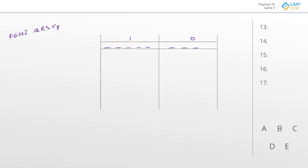The first rule tells us that if we have either or both — really, that just means if we have at least one of G or H — then we're going to have to have an F. There's a lot of conditional rules in this game, so there's a good chance they're all going to end up linking up. So if we have a G or an H, then we must have an F. Contraposed: if we don't have an F, then we will not have a G and we will not have an H.